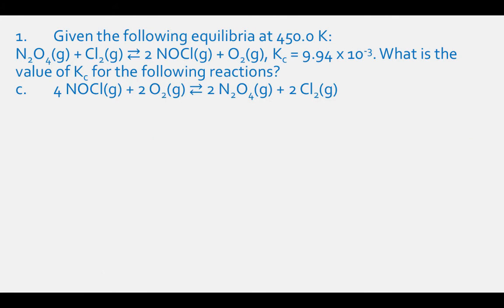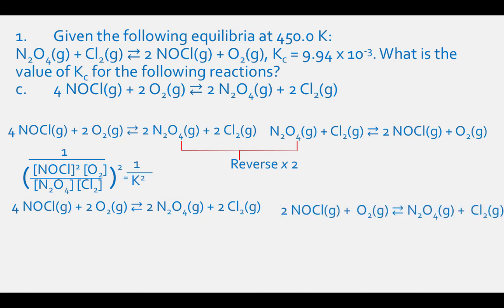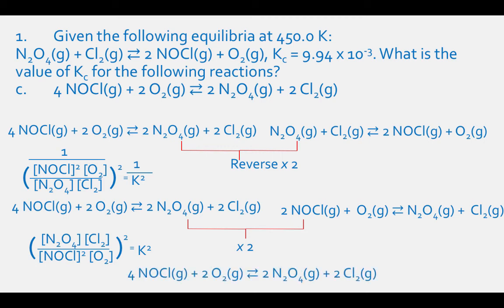To solve part C, we can do this a couple of ways. Comparing part C to the original equation, it is the reverse reaction multiplied by 2, so we can square the reciprocal of the original K value. Alternatively, comparing part C to part B, it is 2 times the reaction in part B, so we can square the Kc value from part B. Either way, Kc for 4 NOCl (gas) plus 2 O2 (gas) in equilibrium with 2 N2O4 (gas) plus 2 Cl2 (gas) equals 1.01 × 10⁴.